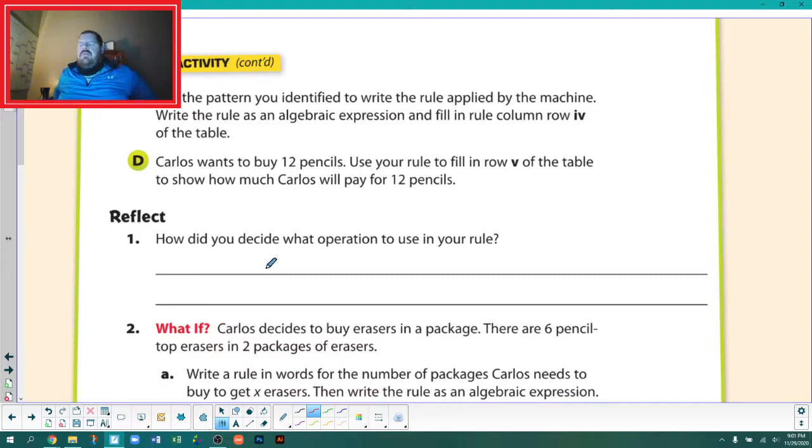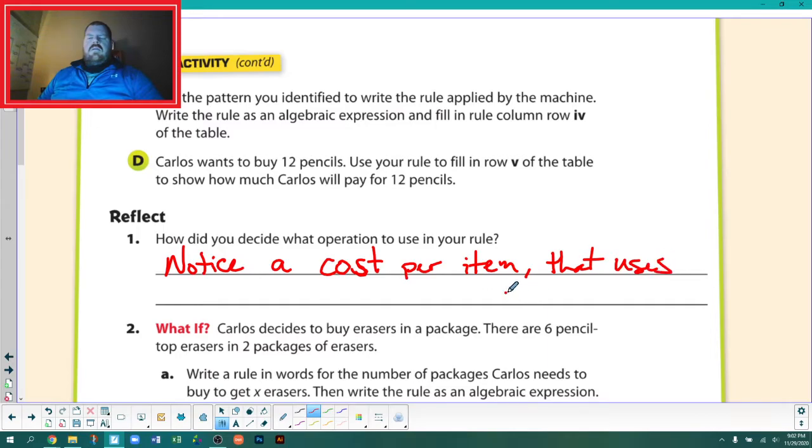If we have X number of pencils, our rule is going to be 25 cents per pencil. So 0.25 times X would be our rule. If we buy 12 pencils, we're going to look at 0.25 times 12, and that's going to be $3. Describe any patterns you see: we see the cost increases by 25 cents per pencil. One pencil costs 25 cents, back to our unit rate concepts.